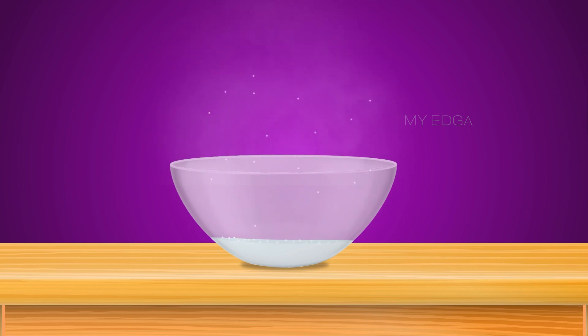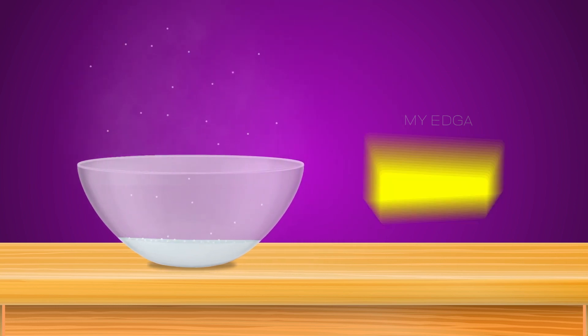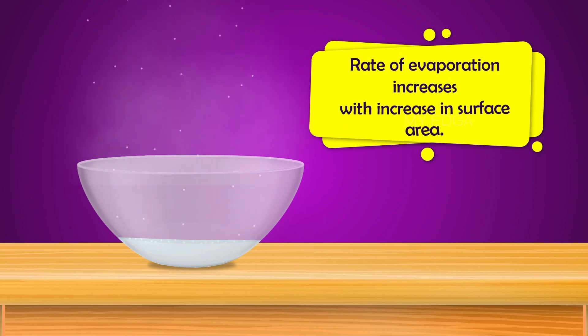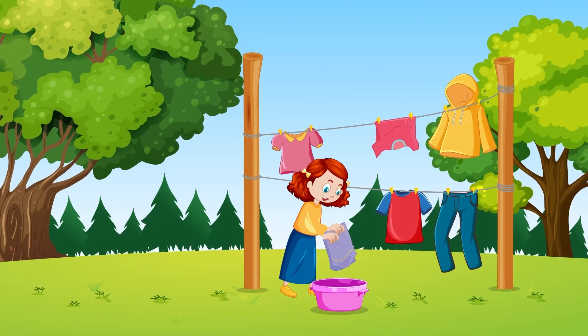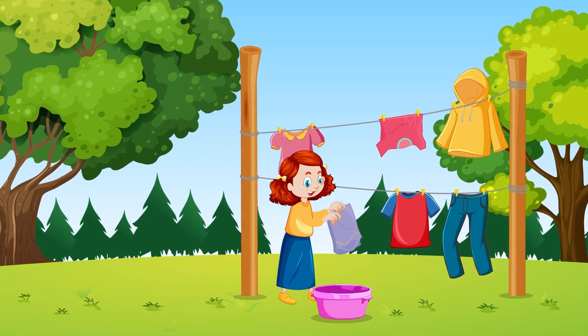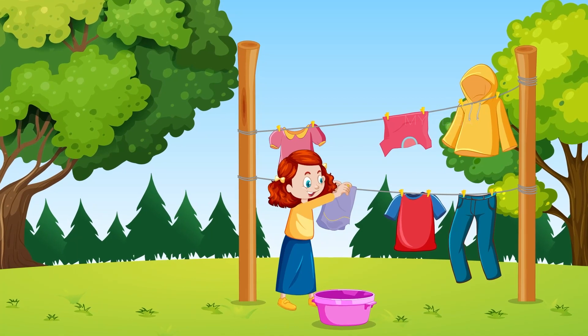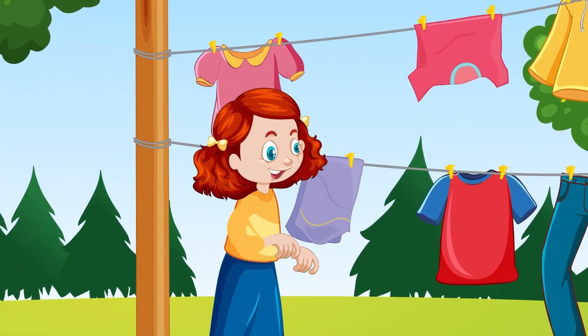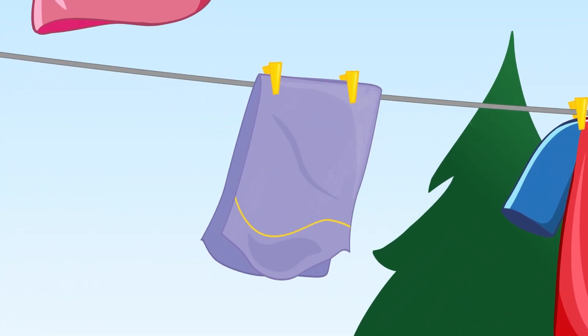We can say that the rate of evaporation increases when surface area increases. Now you might understand why we spread out clothes for drying. When we spread out the clothes, it will have a larger surface area for evaporation to happen faster.